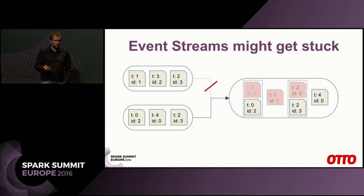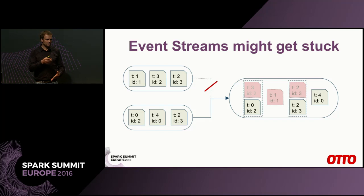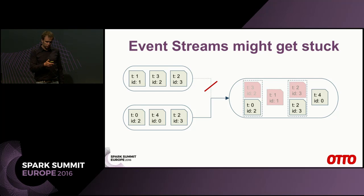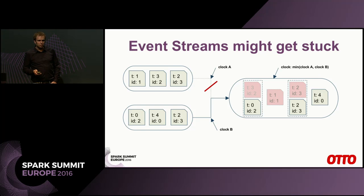Event streams might get stuck because some system might be redeploying. We do continuous delivery, so source systems are potentially deployed about 20 times a day, meaning we cannot guarantee there won't be any delays. If we didn't account for this, we would timeout merge sets that are incomplete and introduce errors. So we came up with the requirement to have two different clocks — one per stream — and take the minimum of all clocks as the new business clock.